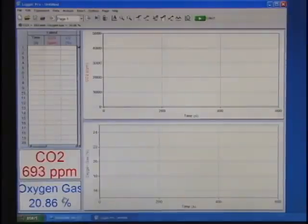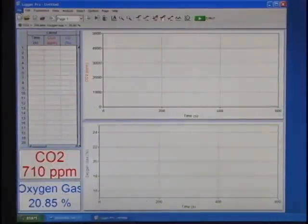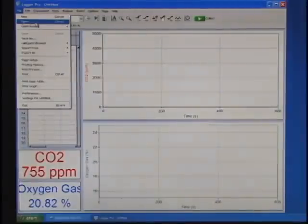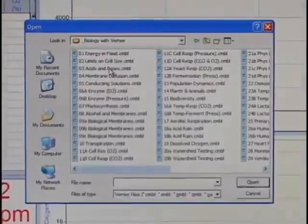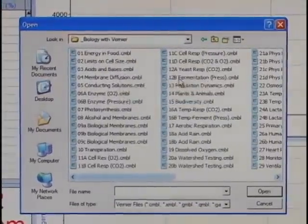For this particular experiment, we need to open an experiment file. To do this, go to File, Open, click Biology with Vernier, and choose Experiment 11D.